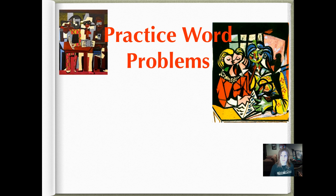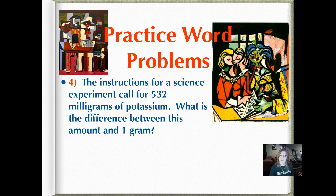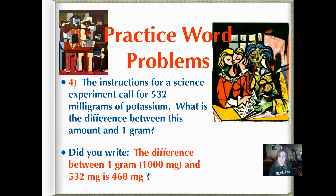So here's our practice word problem. This isn't going to be worked out exactly the way we've been converting the other metric units. So read the problem really carefully. Number four. The instructions for a science experiment call for 532 milligrams of potassium. What is the difference between this amount and one gram? So first of all, we need to know how many milligrams are in one gram. And we can look at King Henry to figure that out. And then the second step is going to be finding the difference between that amount and the original amount. Did you write the difference between one gram, which is 1,000 milligrams, and 532 milligrams is 468 milligrams?